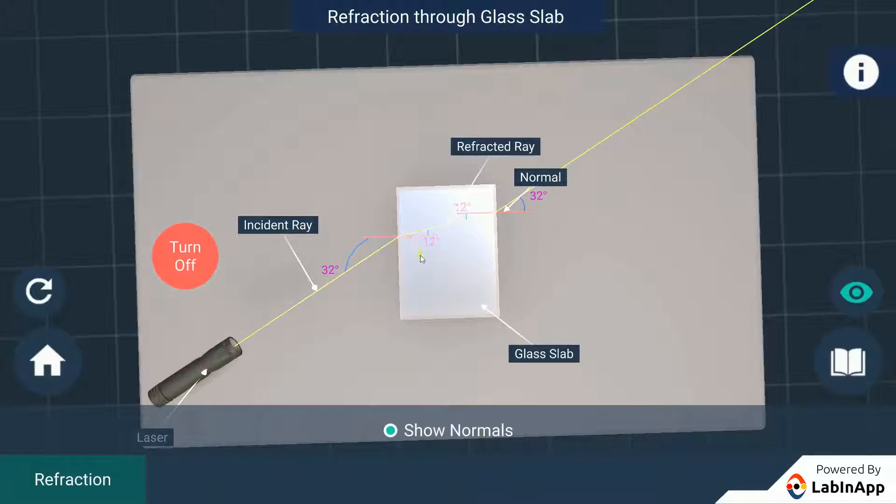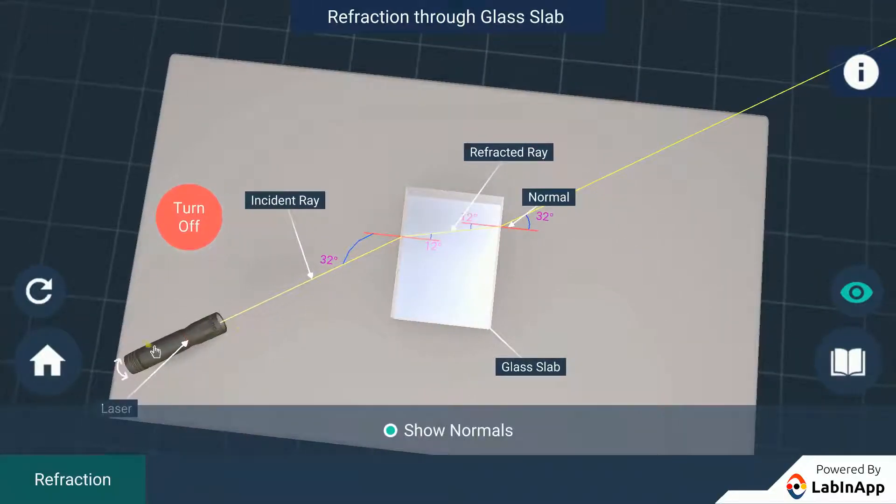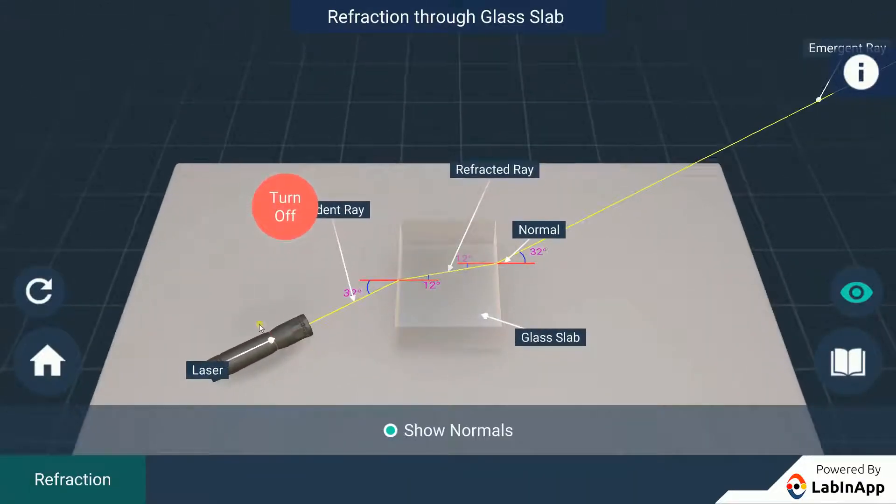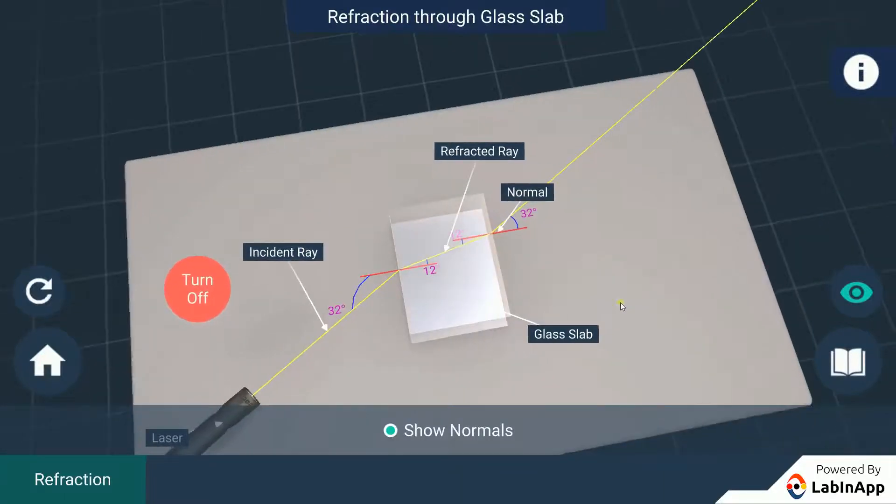Experiments show that refraction of light occurs according to certain laws. 1. The incident ray, the refracted ray, and the normal to the interface of two transparent media at the point of incidence all lie in the same plane.